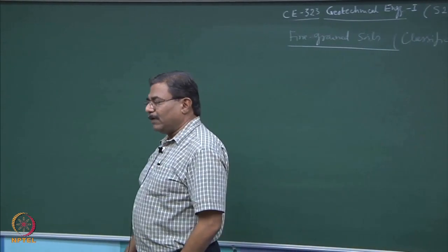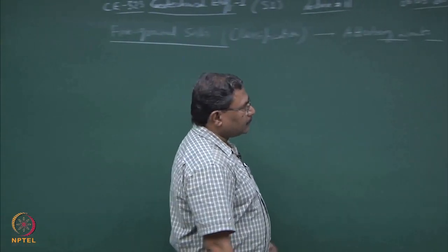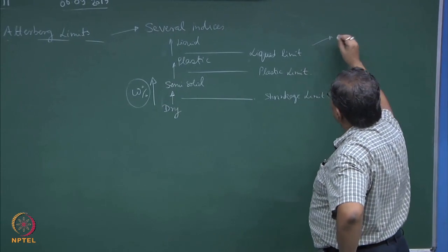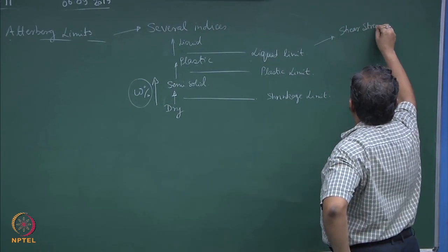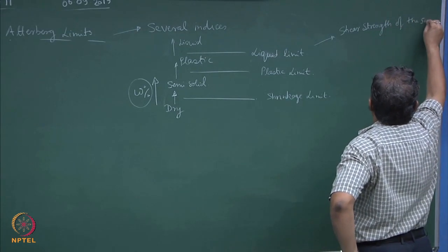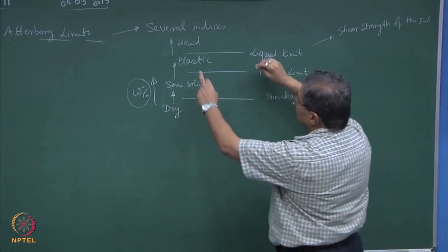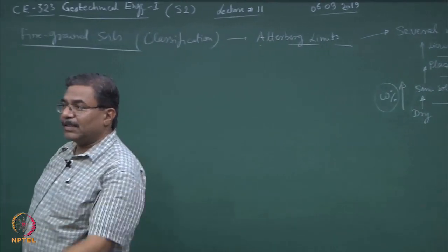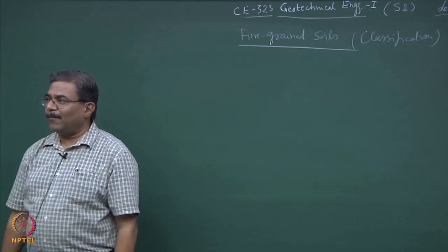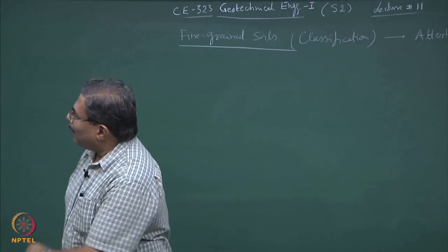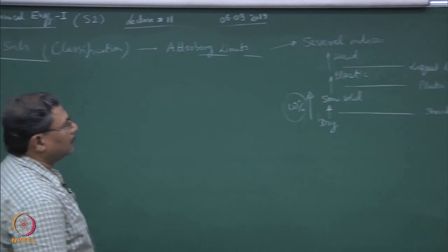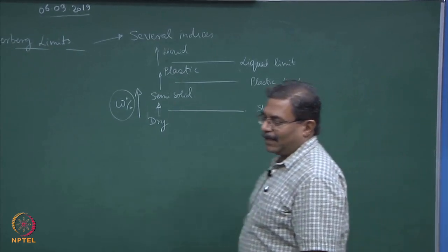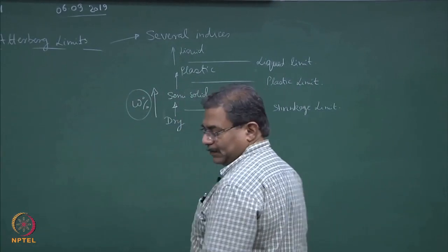Though these indices look very primitive, they have a lot of applications in science and technology. In the second course, when I will be teaching, we will be talking about shear strength. This is the limit of the moisture content beyond which the system starts flowing — it has no shear strength on its own. Liquid limit is the limit beyond which the soil behaves like a flowable material, meaning it has the minimum possible shear strength.